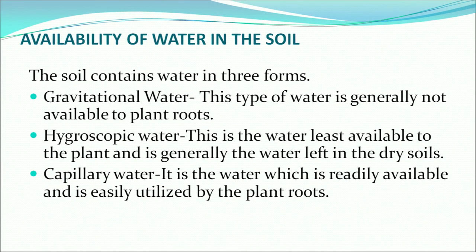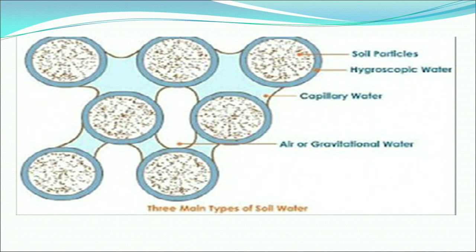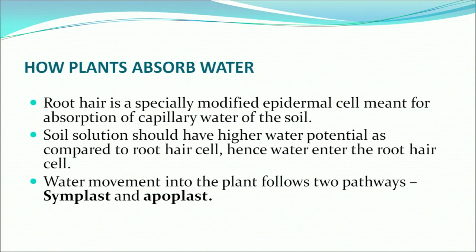The three forms of soil water are: hygroscopic water, capillary water, and gravitational water. Gravitational water is not generally available to plant roots as it is deep in the soil. Hygroscopic water is the least available and is generally left in dry soils. The available water is capillary water — it is readily available and easily utilized by plant roots. Soil solution should have higher water potential compared to root hair cells; otherwise there will be no absorption. Hence water enters into the root cells.